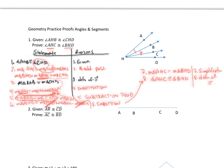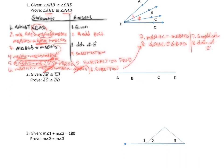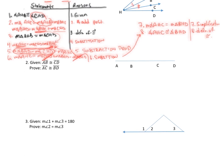Alright, moving on to number two. We're given that segment AB is congruent to segment CD. And we need to prove that AC is congruent to BD. So AC, this segment right here, is congruent to segment BD. Well, if I just start with AB or CD, I really can't say anything. So this is kind of like the proof we just did above — there's not much I can say from the givens directly.